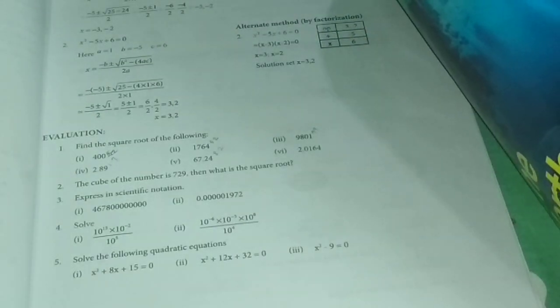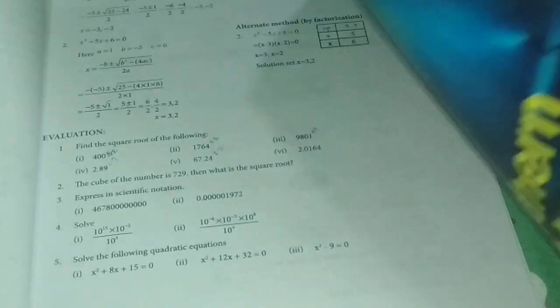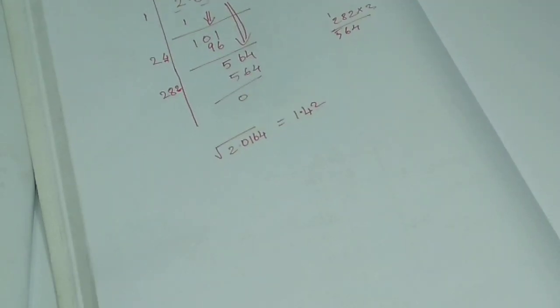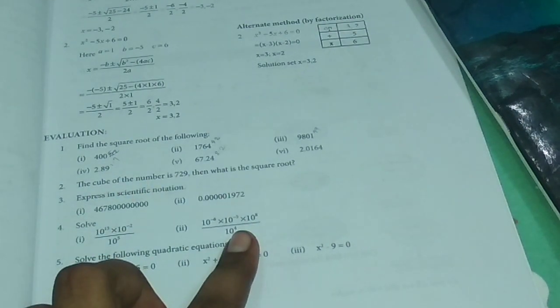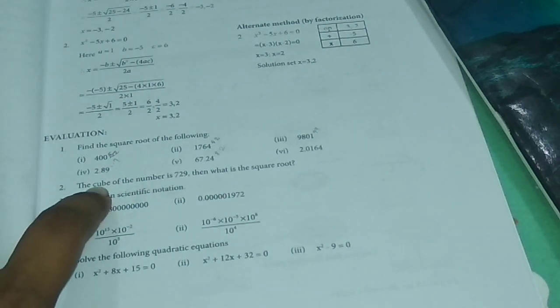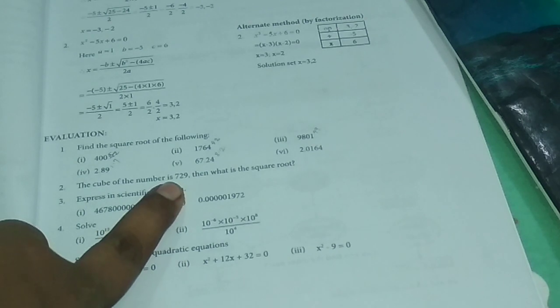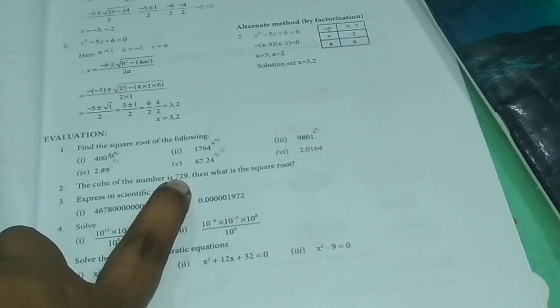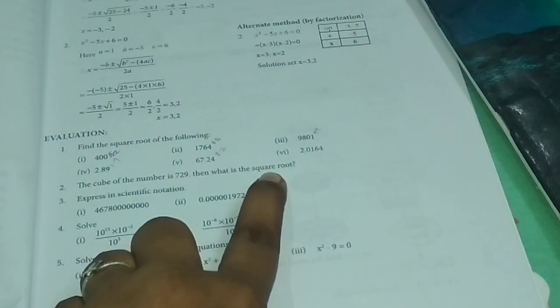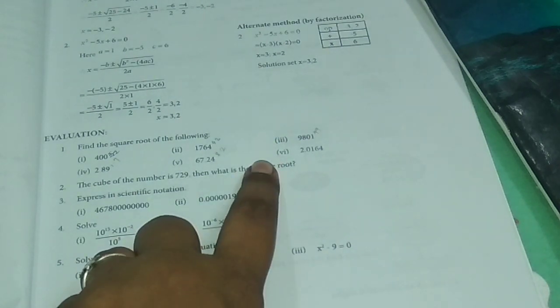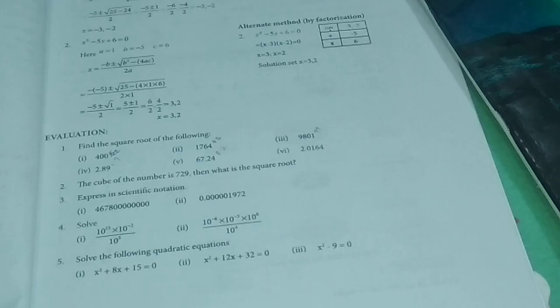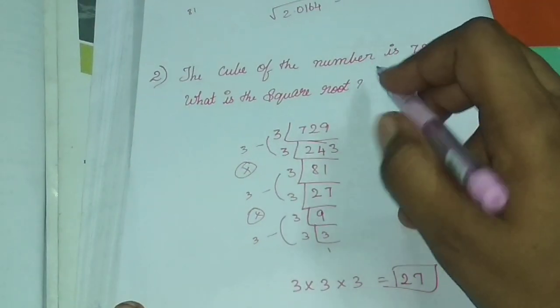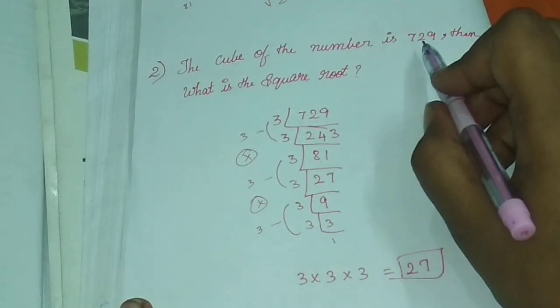Next, the cube of the number is 729, then what is the square root? Okay, this is the same question. Here is the cube or square? The cube of the number is 729, so we have to find the square root. Before we do it, we can use this number form. We have to use this simple method with LCM here. We have to do the 3 table.